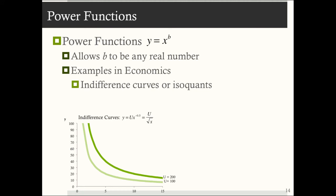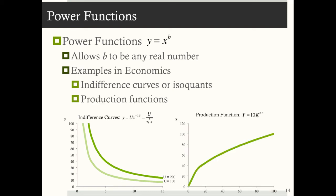So in your intermediate microcourses, you're talking about indifference curves or isoquants. You often use power functions. In the graph below, we have a function y is equal to u, which is going to be some constant. For example, I have two graphs here, u is equal to 100 and u is equal to 200. So this function is y is equal to u divided by the square root of x.